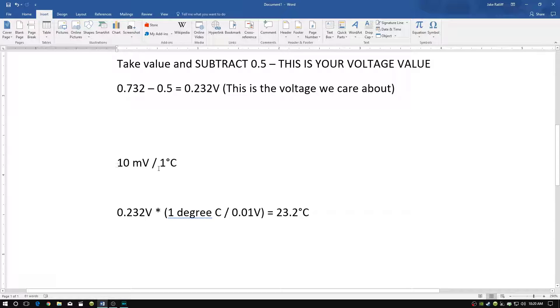Now, this next bit of information right here, you can get from the data sheet online. And what it says is that for every 10 millivolts of change, corresponds to a 1 degree Celsius change in temperature. So basically, every time the voltage goes up 10 millivolts, the temperature is going to change by 1 degree Celsius. So this is our conversion factor.